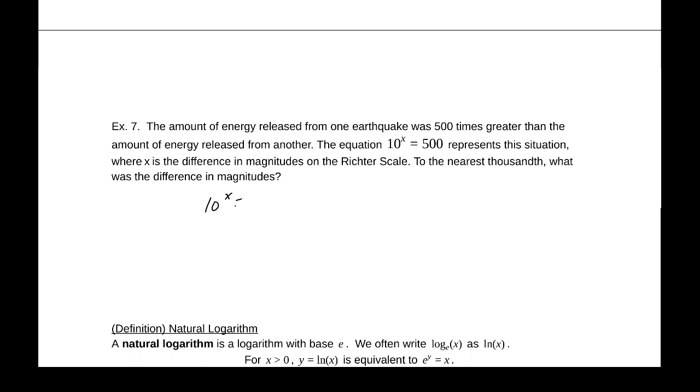Well, we have 10 to the x equals 500. So to evaluate or solve for x, we need to rewrite this as x equals log base 10 of 500. Or we can simply write that as log of 500, which we can approximate in the calculator as 2.699, rounding to three decimal places because we're talking thousandth place. So the difference in magnitude is approximately 2.699.